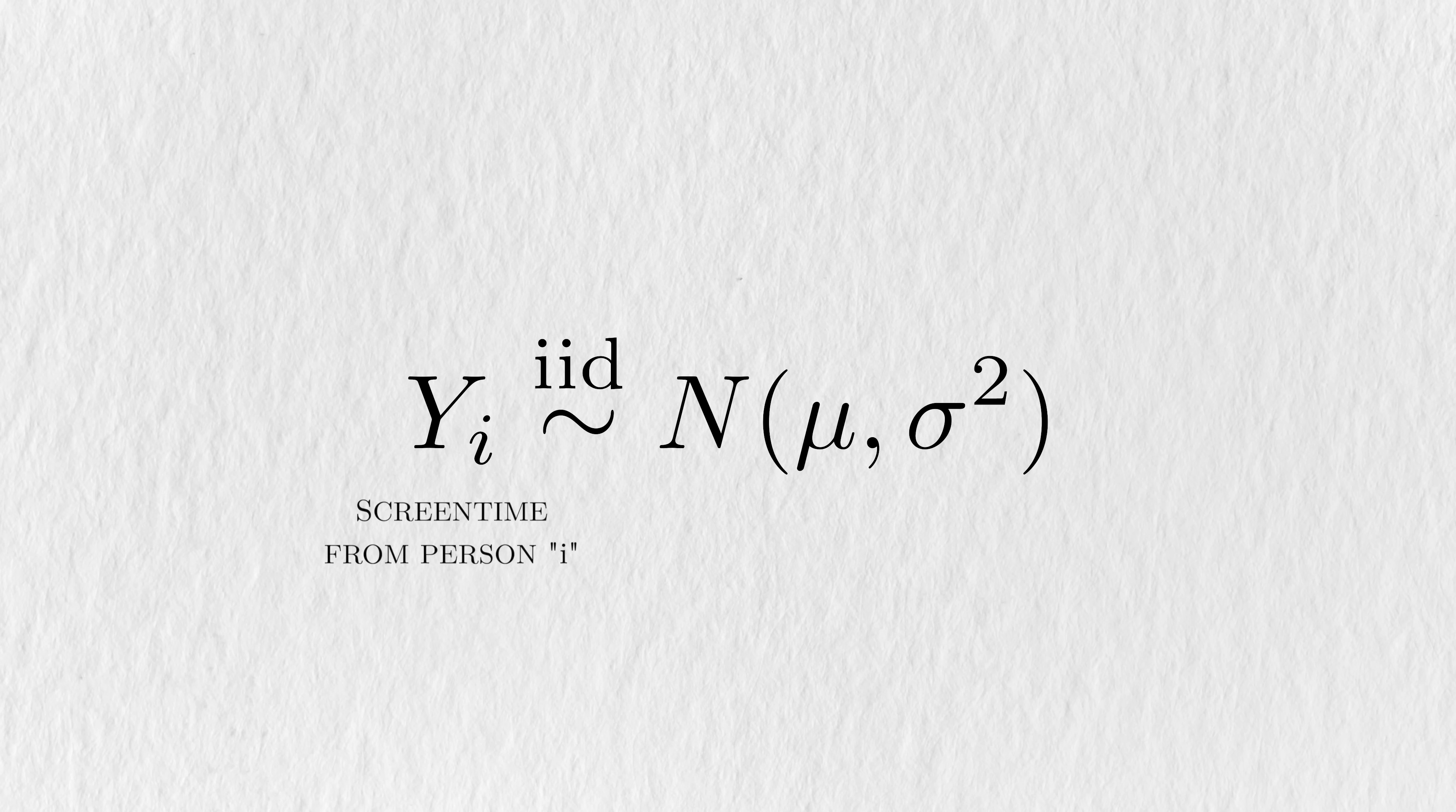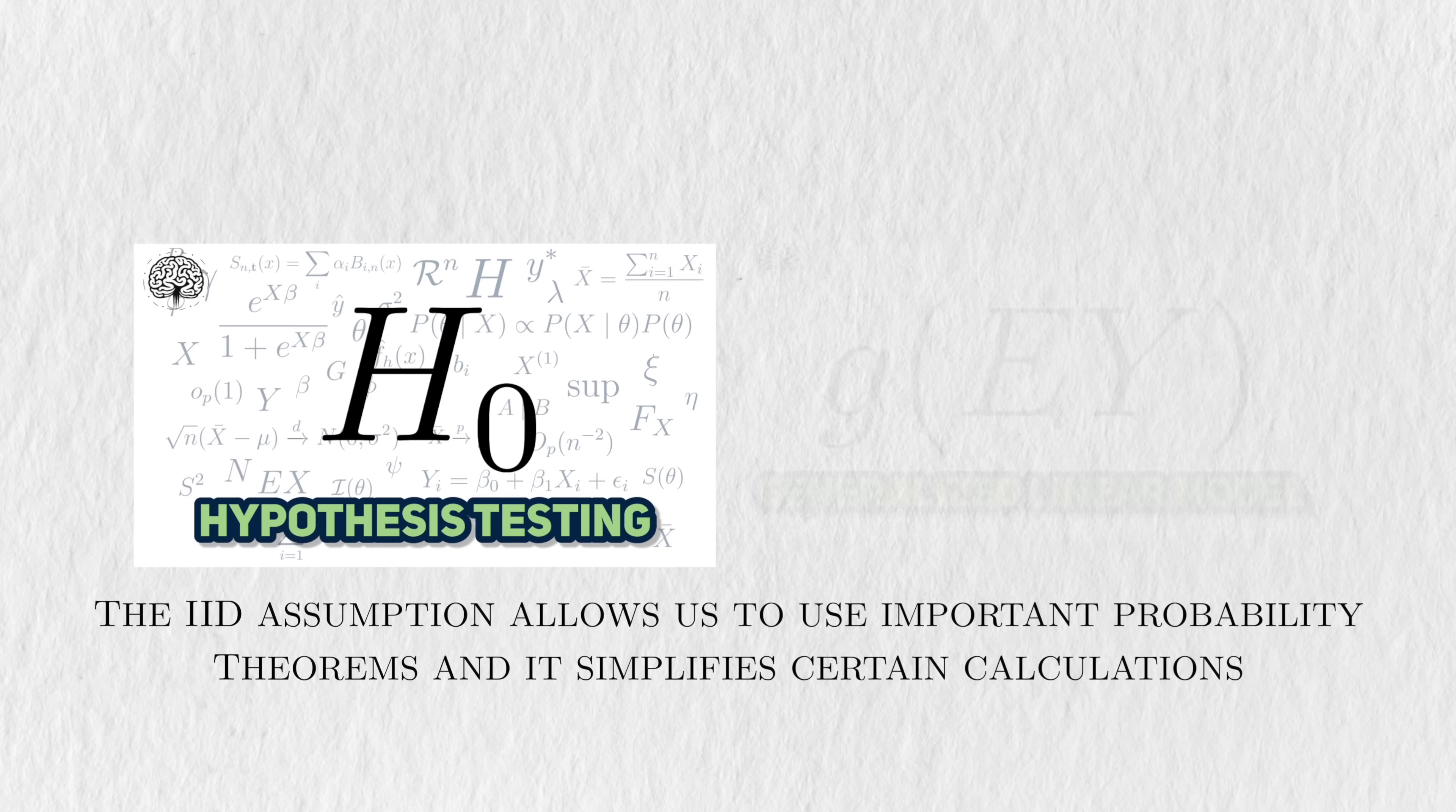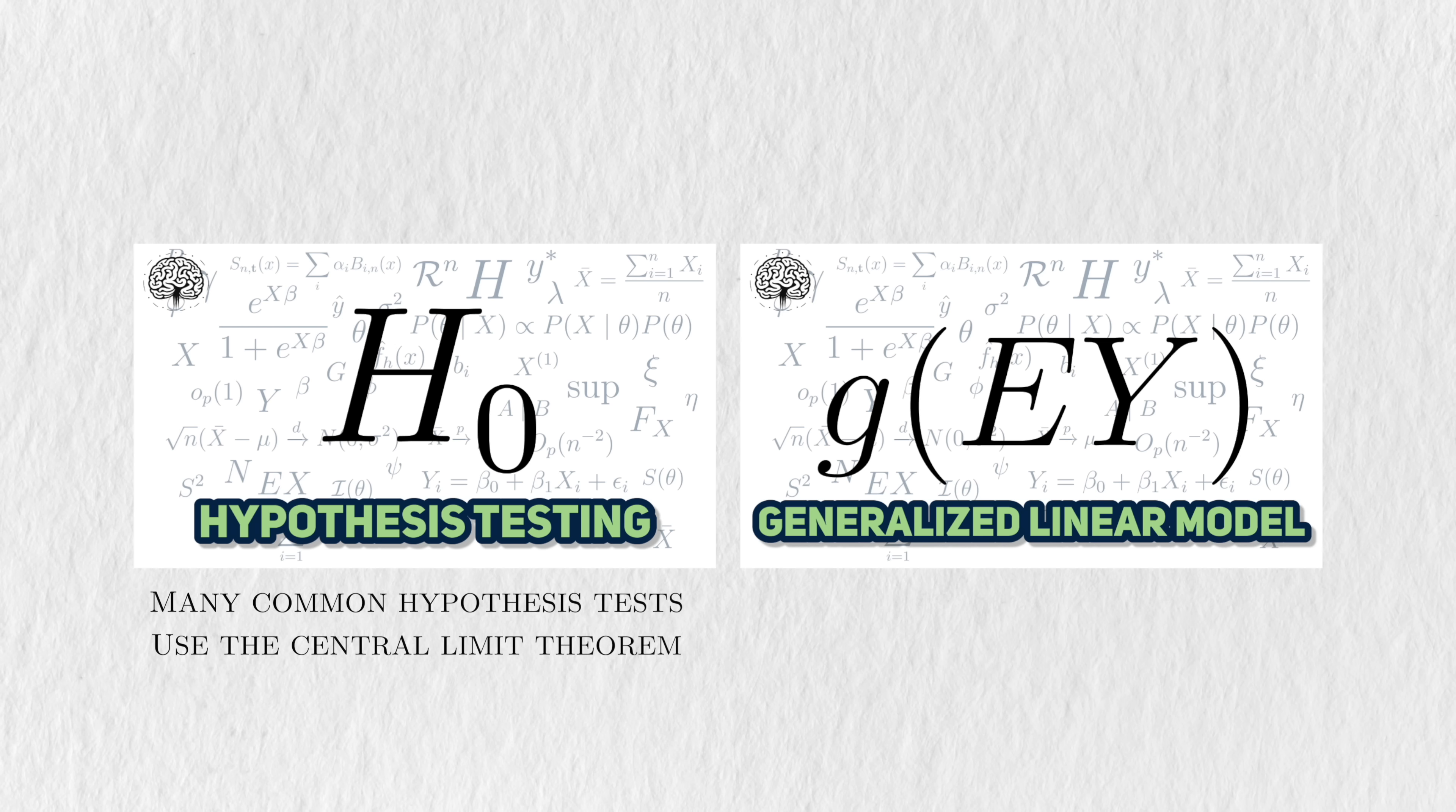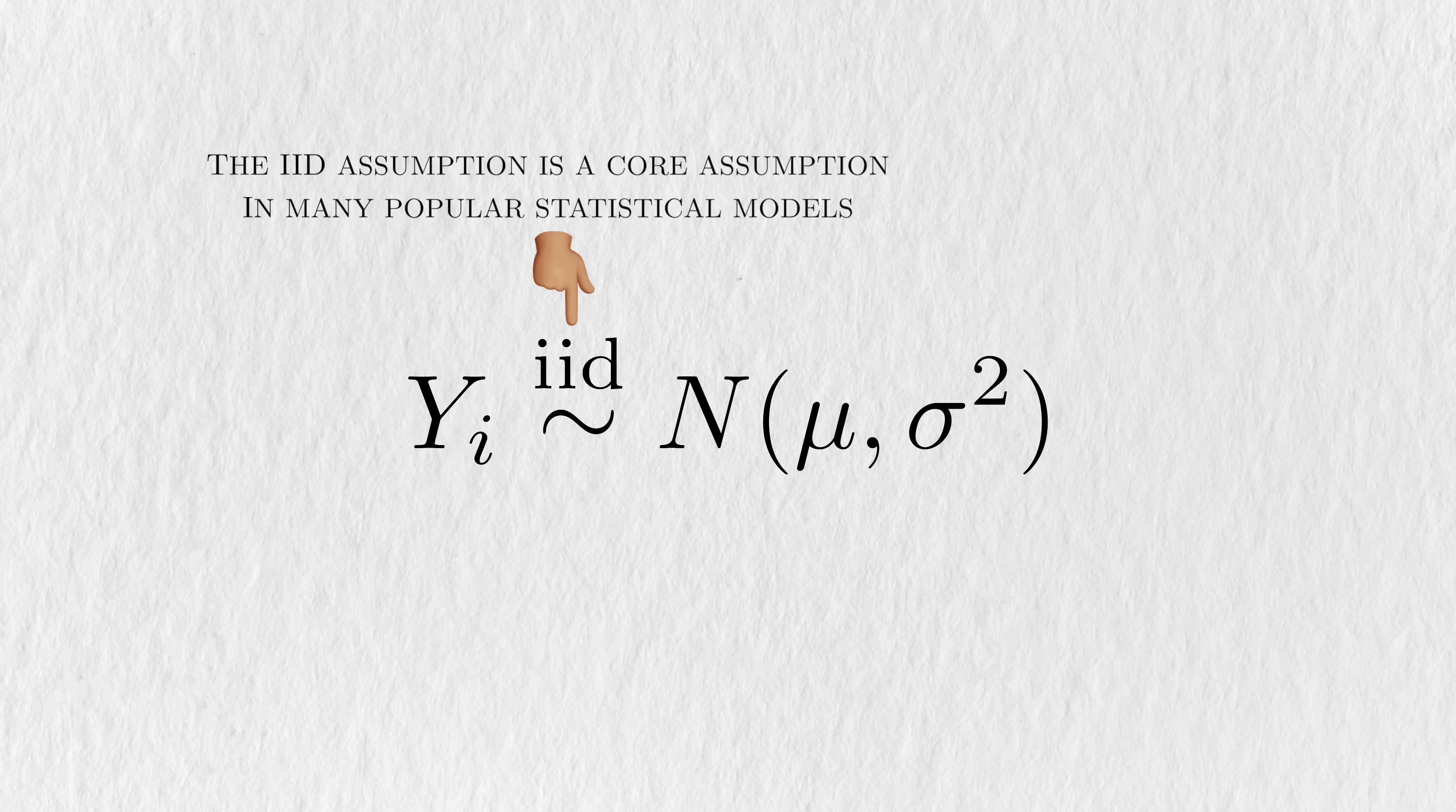Where yi represents the screen time of person i. The IID assumption is significant because it allows important probability theorems to be used and for certain calculations to be simplified. For instance, many standard hypothesis tests rely on the central limit theorem to gain access to a convenient sampling distribution. By extension, the central limit theorem relies on the IID assumption. Generalized linear models rely on maximum likelihood theory to estimate their parameters. And I think you know by now what maximum likelihood needs to assume. The point is, the IID assumption is a core assumption in the most commonly used models.